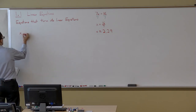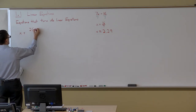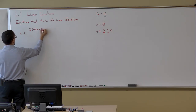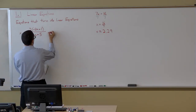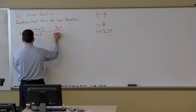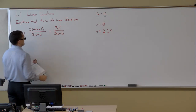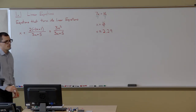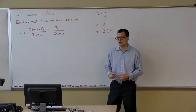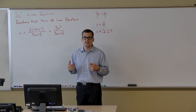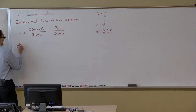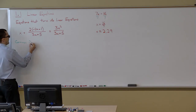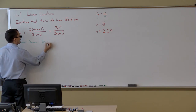Let's take x plus 2 times negative 2x plus 1, divided by 3x plus 5, set equal to 3x squared over 3x plus 5. We have one denominator going on, so once again I would clear out the denominator to start. We have one common denominator, and it is 3x plus 5.